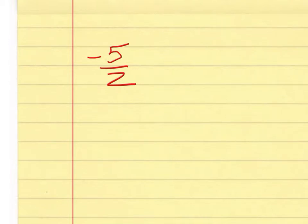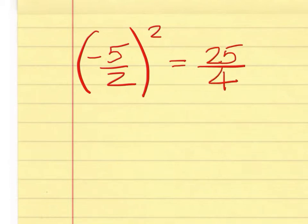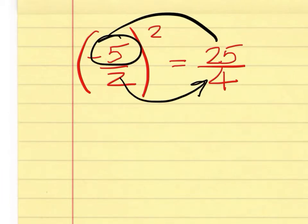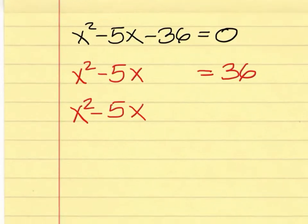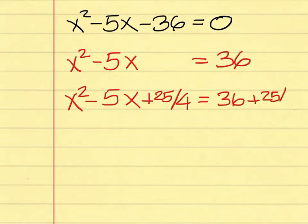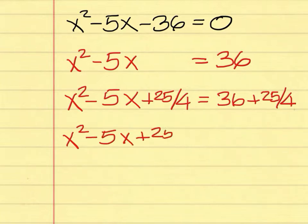On a scratch piece of paper: half of negative 5 is negative 5 over 2. If I square that, I end up with a positive 25 over 4 — you square the 5 and the 2, and a double negative is positive. You put that 25 over 4 in this spot. But what you do to one side, you must do to the other, so you add 25 over 4 to the right side. You can't simplify the left-hand side yet.